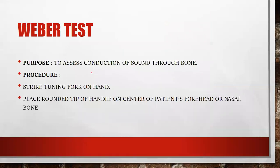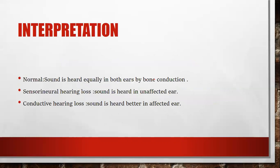Next is the Weber test. The purpose is to assess the conduction of sound through bone. The procedure: strike the tuning fork on the hand and place the rounded tip of the handle on the center of the patient's forehead or on the nasal bone. In the Weber test, we use only one position — the tip of the handle on the forehead. The normal interpretation is that sound is heard equally in both ears by bone conduction.